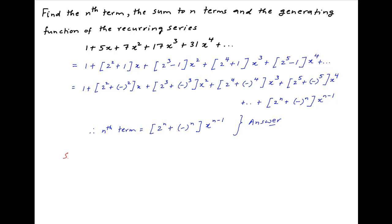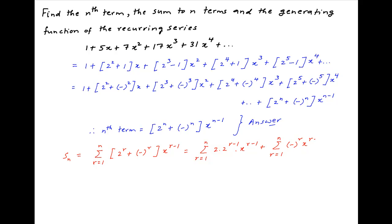Now the sum to n terms of this series, denoted by Sn, is therefore equal to summation r going from 1 to n of (2 raised to the power r plus (−1) raised to the power r) multiplied by x raised to the power r minus 1. This splits into: summation of 2 times 2 raised to the power r minus 1 times x raised to the power r minus 1, plus summation r going from 1 to n of (−1) raised to the power r times x raised to the power r minus 1.